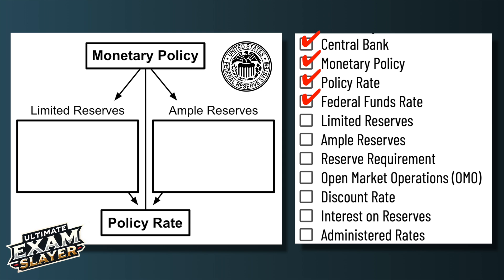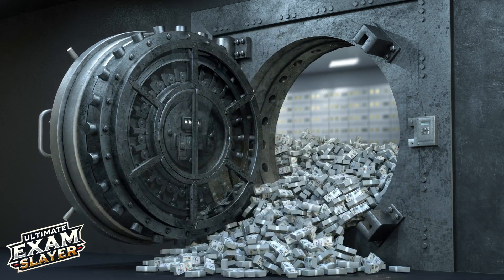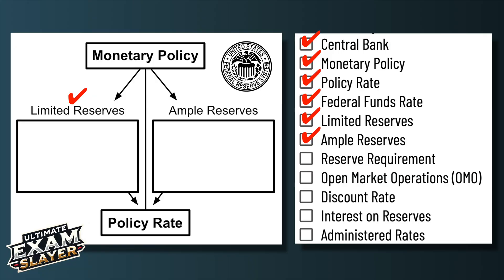How the central bank actually does it depends on whether there are limited or ample reserves in the banking system. Limited reserves means commercial banks have very few reserves with the central bank. Ample reserves means there's a ton of money — these commercial banks have a ton of money with the central bank. If there are limited reserves, the three traditional ways of increasing or decreasing the money supply to affect interest rates are going to work.